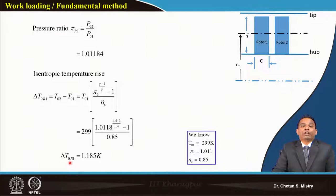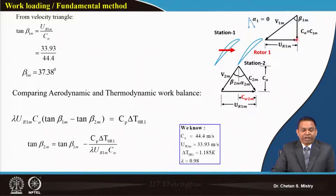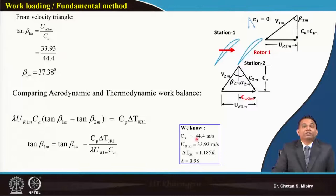Considering the inlet velocity triangle at the mid station: since entry is axial, the inlet whirl component C_w1 = 0. The relative flow angle at entry is given by tan(β_1) = U / C_A = 33.93 / 44.4. Both U and C_A are now known, so β_1 can be calculated.